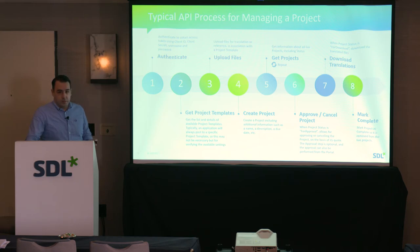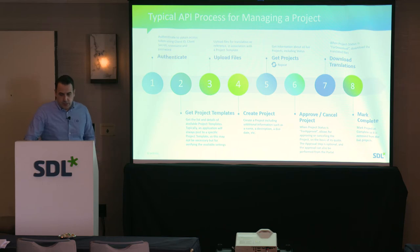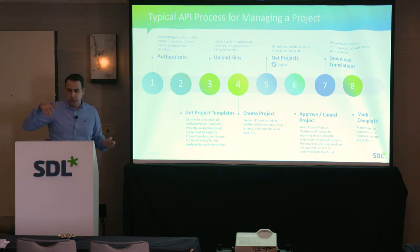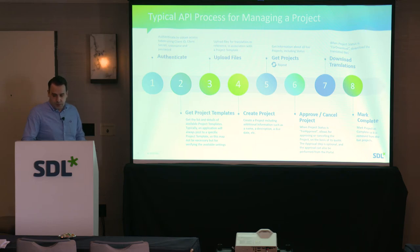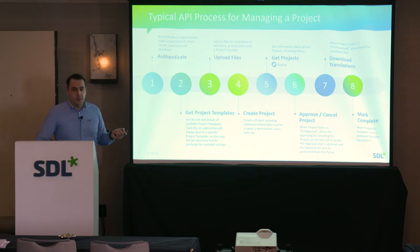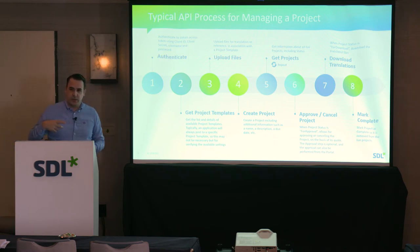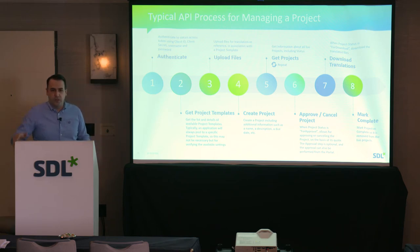You upload your files for translation, specify the project template, and send the project creation call. Once the project is created, a get-projects call returns information about projects in the system and their status. You can also approve and cancel a project programmatically. Once translation is done, it reaches a 'for download' state where you can pull the target files back into your content repository.